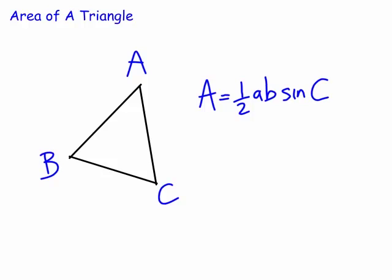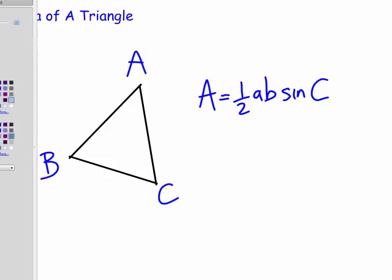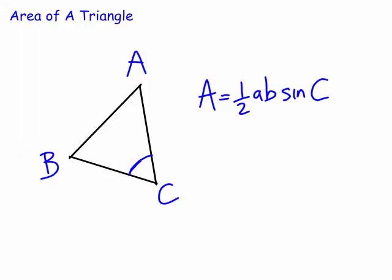What do you need for this formula? You need the sides about the included angle. For example, if we're using sine C, we need the angle C and the two sides a and b that form that angle.